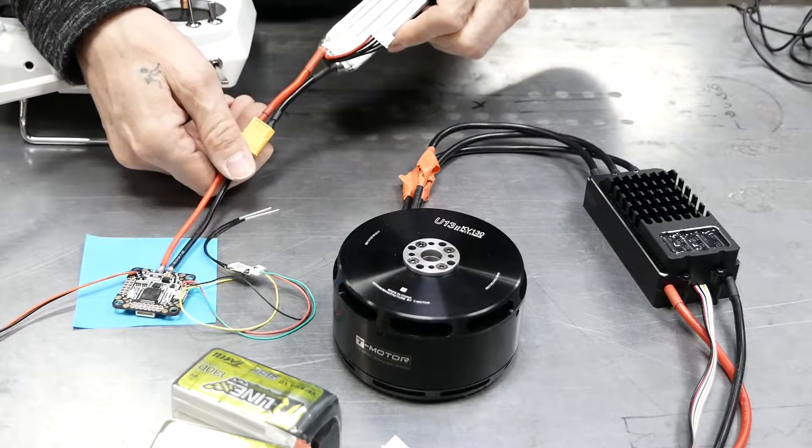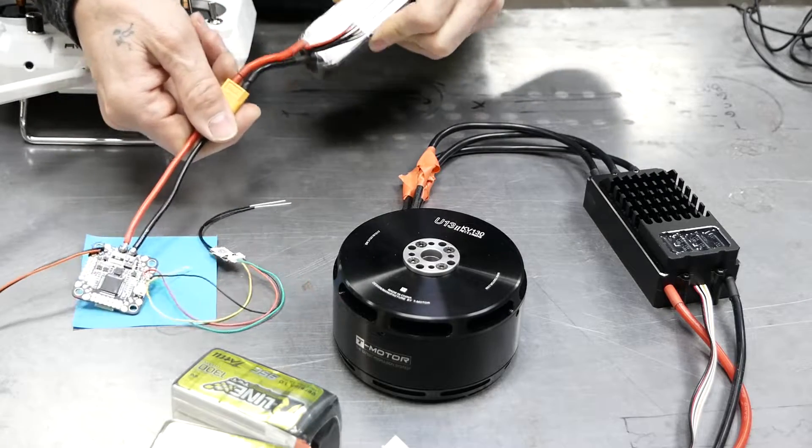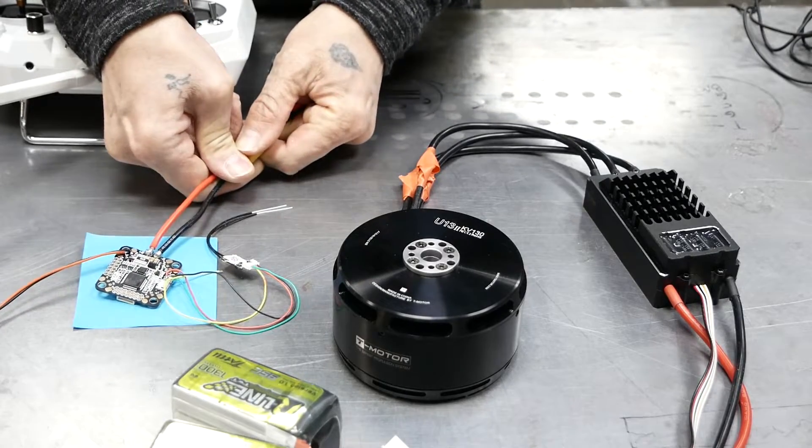So this battery here, if you can see the flight control board, it's off. I got to get a different battery. Hold on, cut.